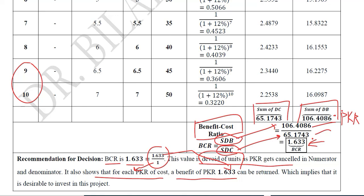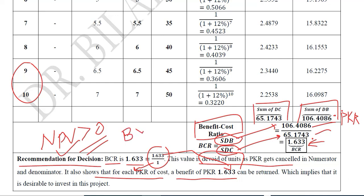Evidently this is a beneficial project, and we can recommend the authorities to undertake it because it is desirable. It is also noteworthy that NPV was greater than 0, a positive value, and here BCR is greater than 1 — both representing a positive situation. No matter whether we opt for NPV or BCR as the DCM criterion, both give us the same result.